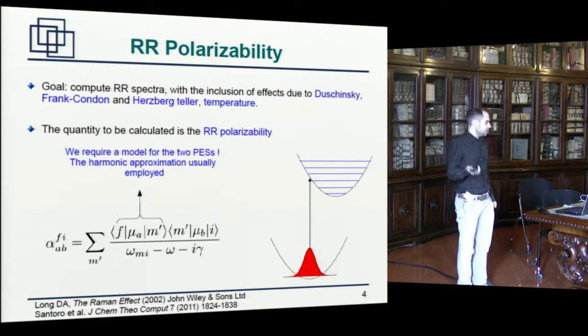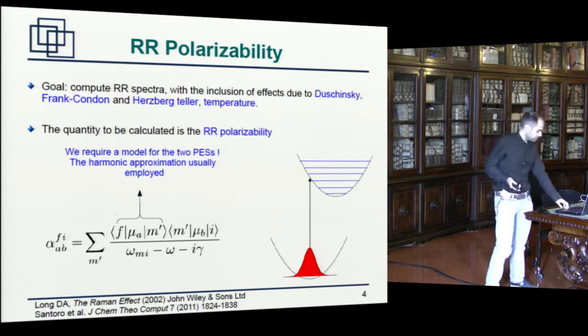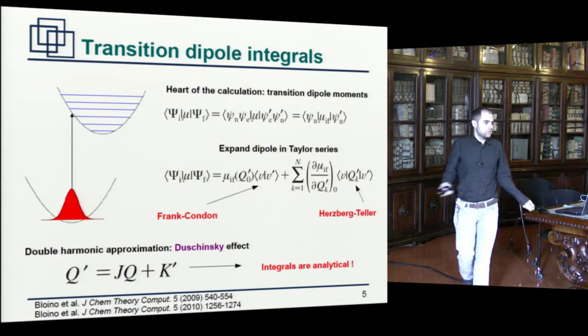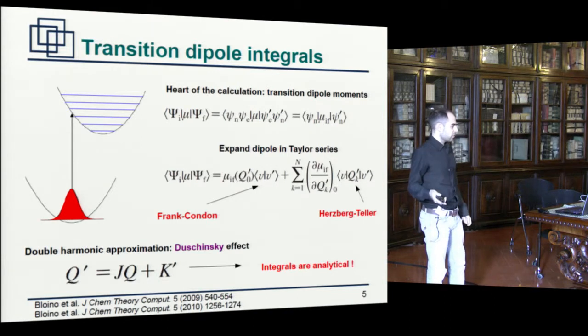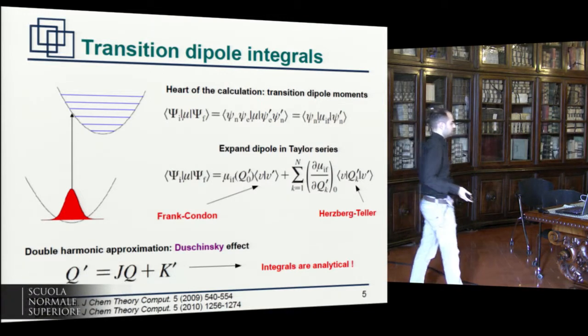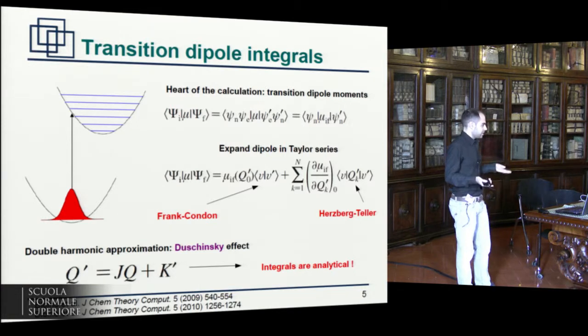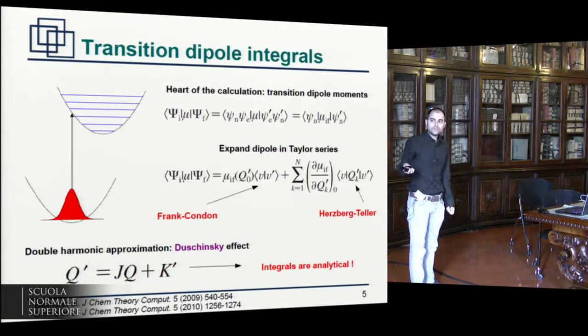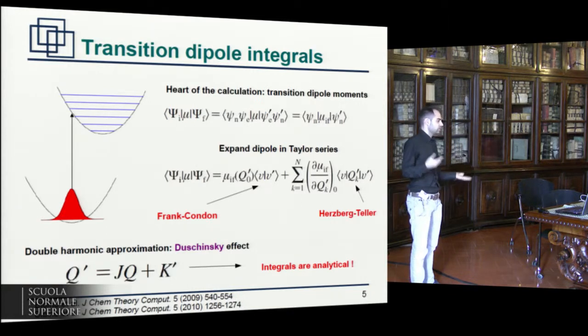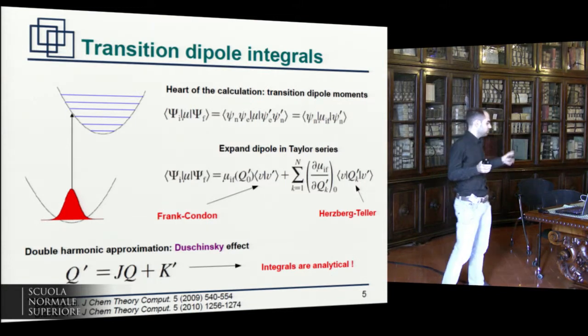So the first thing I need is a model for the two potential energy surfaces, the ground one and the excited one, so that I can find the vibrational eigenstates and do these integrals. What one usually does is to employ the harmonic approximation for both of them, and therefore you get the harmonic oscillator eigenstates. You then expand the transition dipole moments in a Taylor series and truncate it wherever you like. Of course, the problem with this approach is that you have two different sets of normal modes, one for the ground state, one for the excited state, which are apparently unrelated. And in order to do the actual integrals, you have to find a relation between the two.